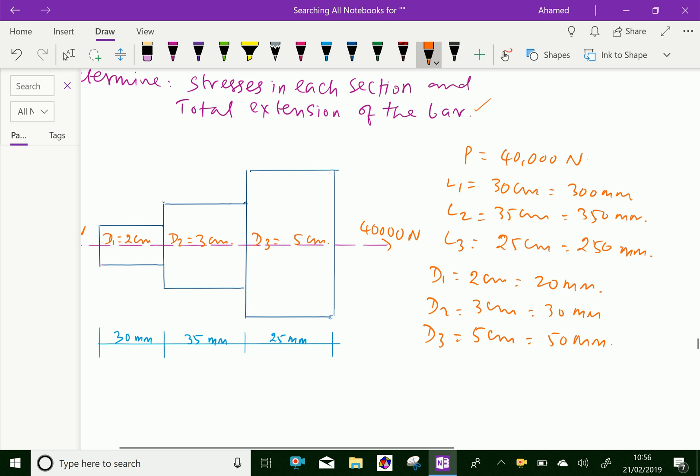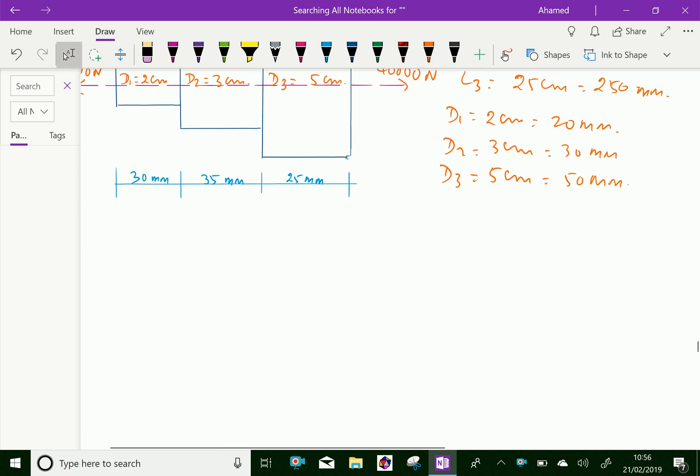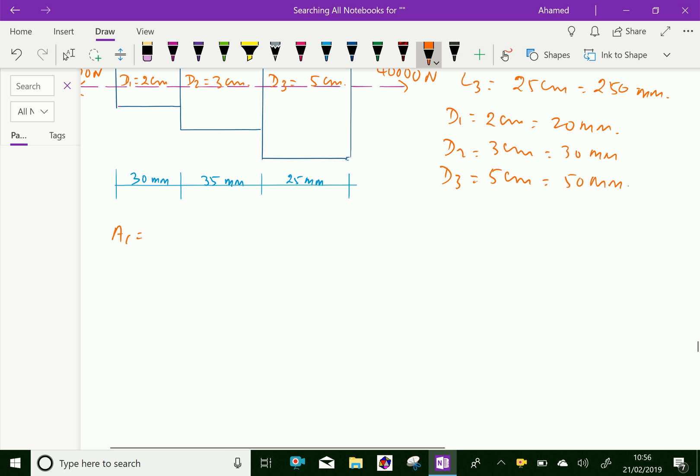Now, let us calculate area of cross section of each section. A1, area of cross section of 1, equal pi by 4 D1 square, that is 20 square. That is 3.14 into 20 square over 4, equal 314 mm square.